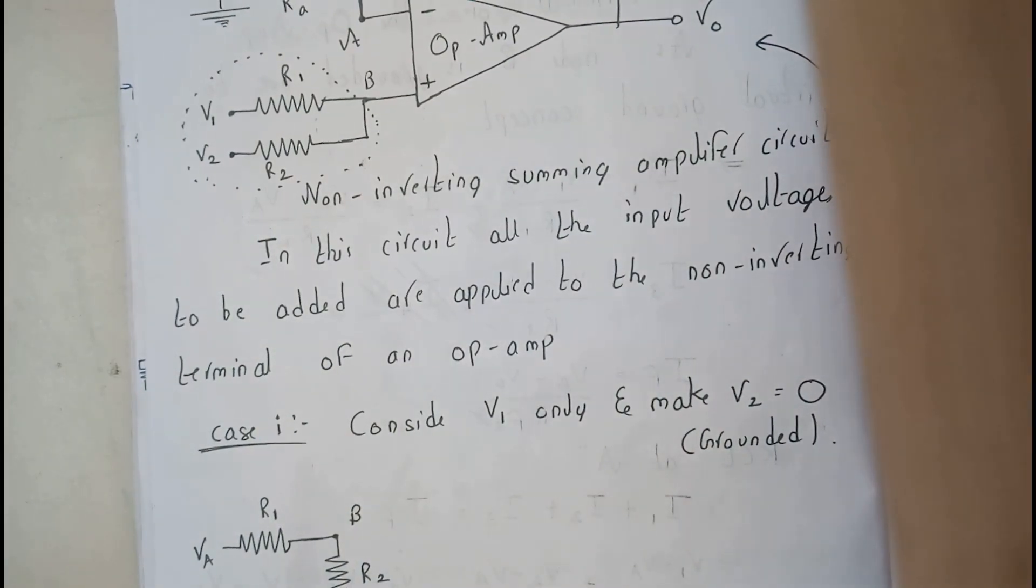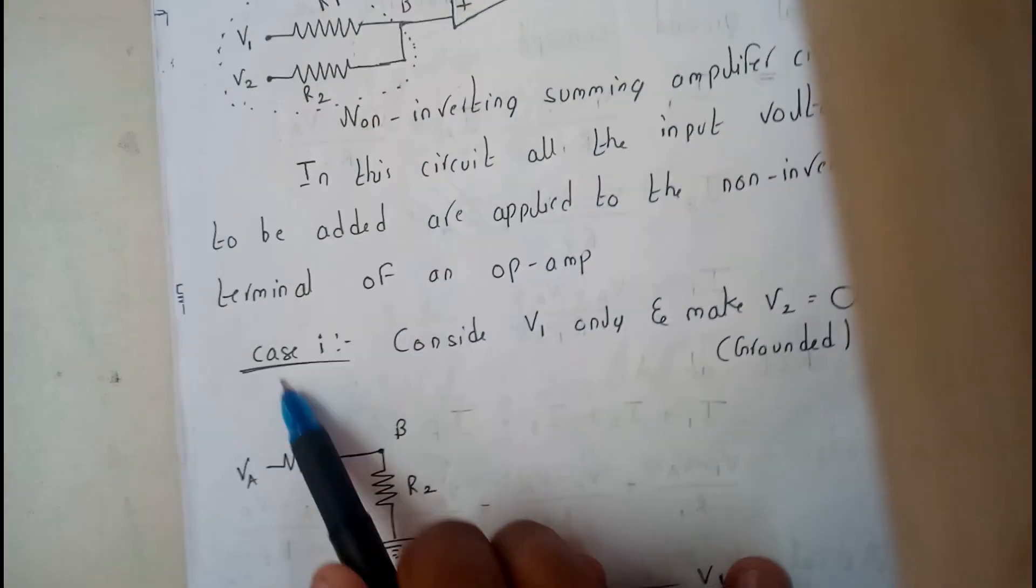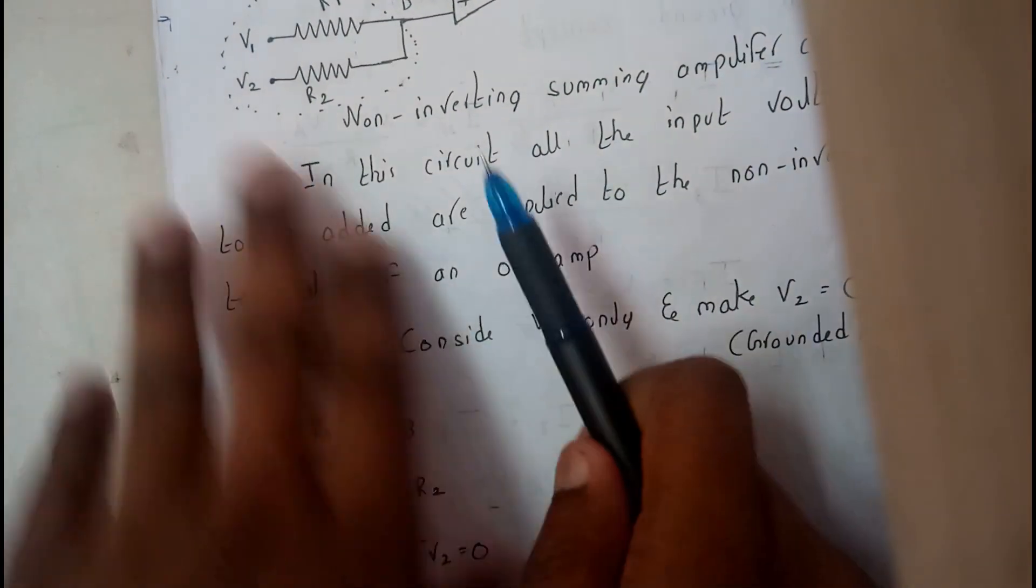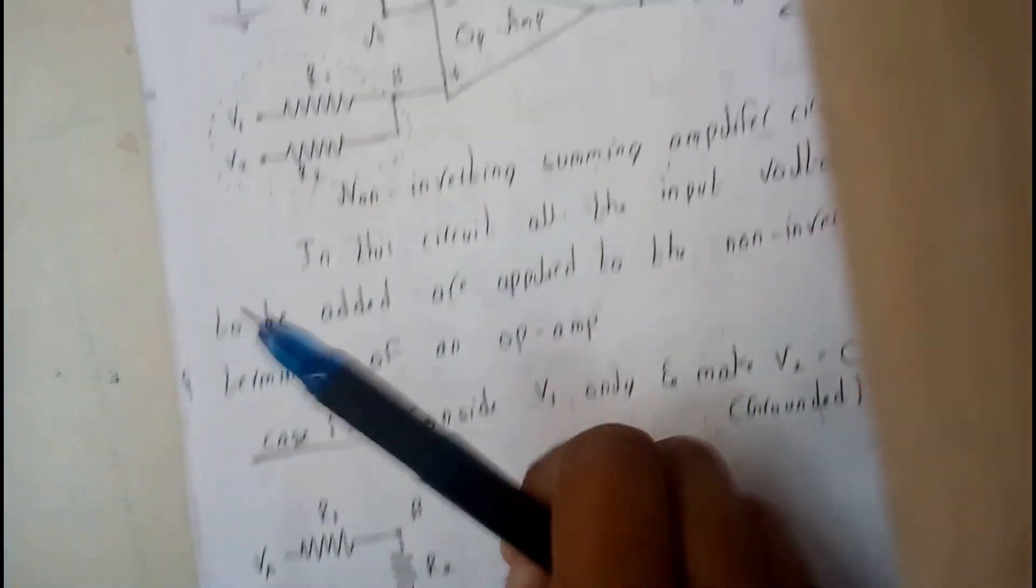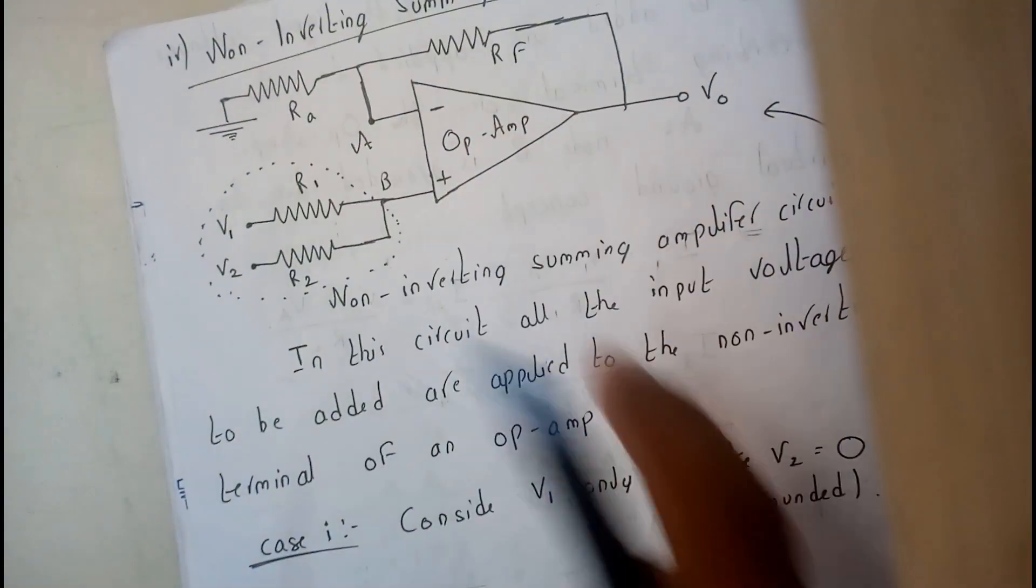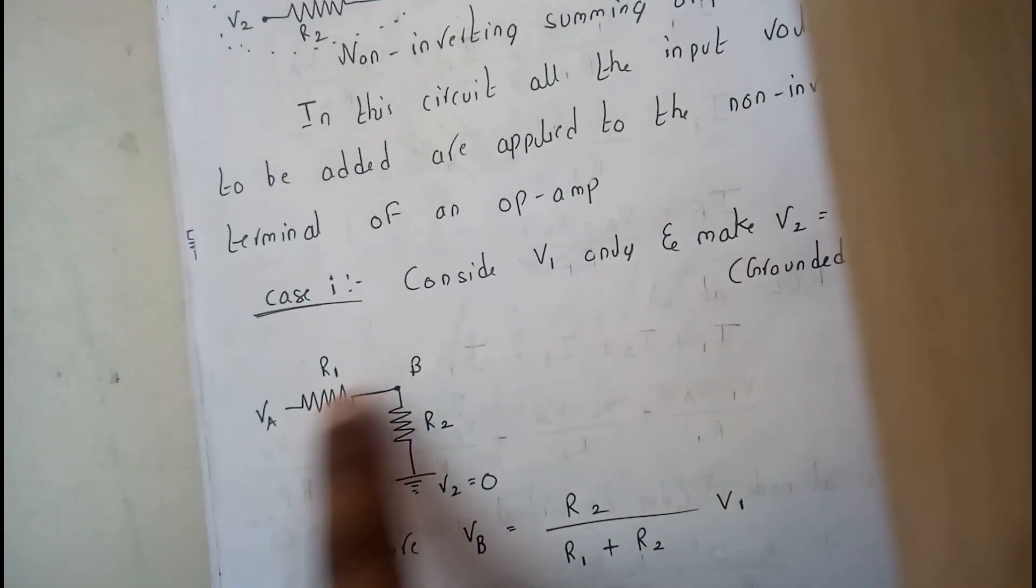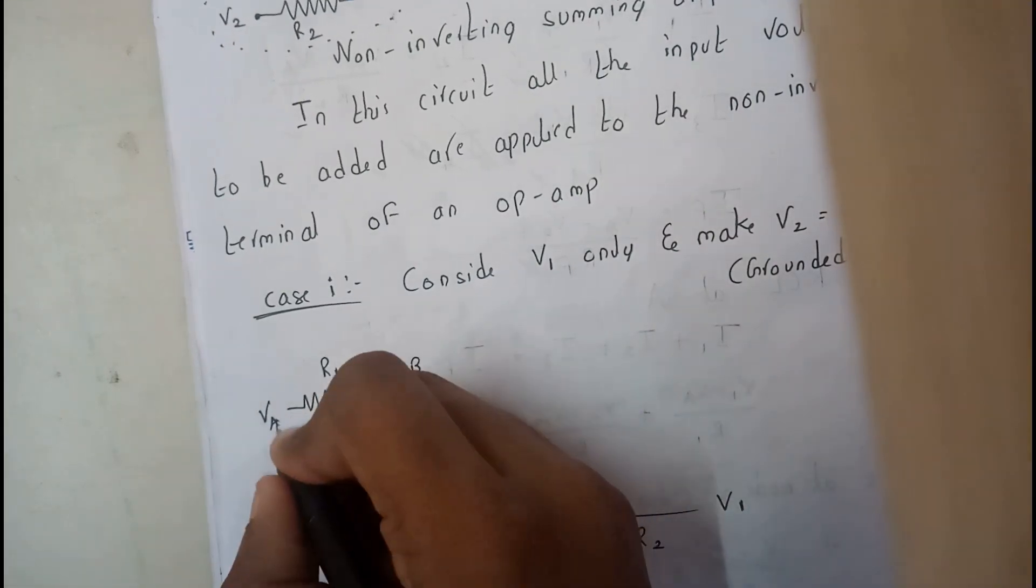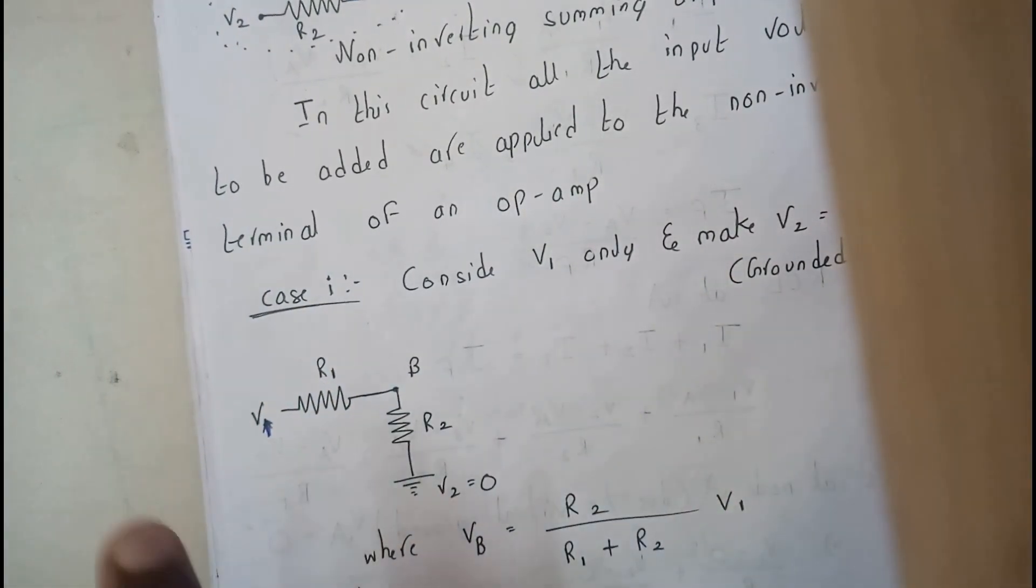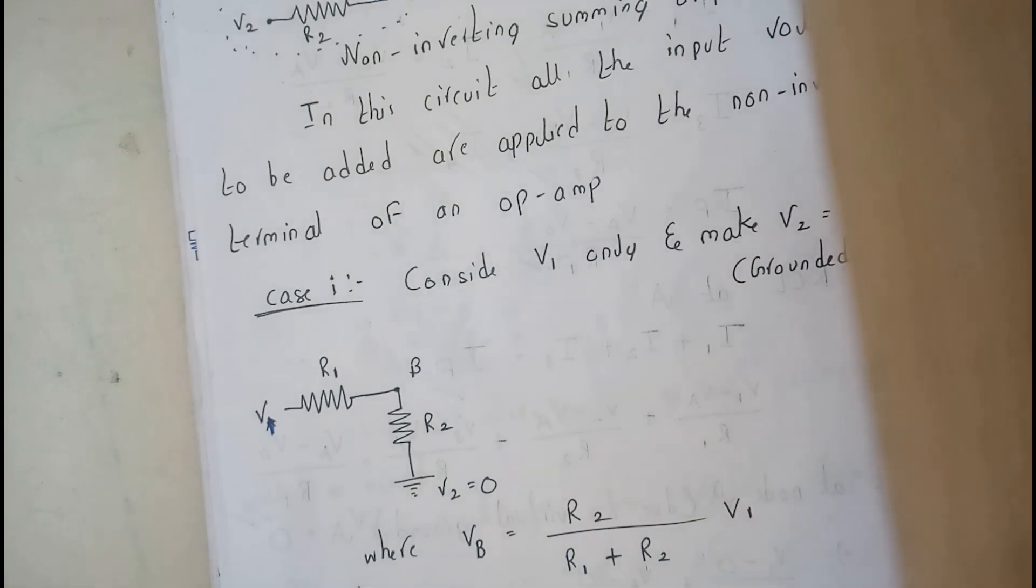Now let us consider, we got three cases. In case one we will be considering that V1 is available and V2 is grounded. Draw this diagram again but you are going to change this part. VA you got to give supply and VB will be zero. V1 will be some value and V2 will be zero.